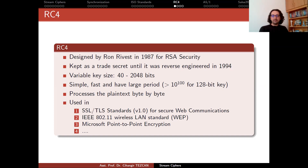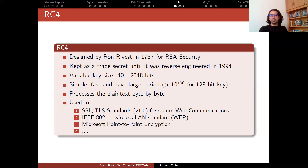RC4 was used in SSL/TLS and was the standard in version 1.0 for secure web communications. It was also used in the wireless LAN standard IEEE 802.11, known as WEP — short for Wired Equivalent Privacy — which was supposed to provide wired-equivalent privacy. It was also used in Microsoft Office for point-to-point encryption, and in many different areas.